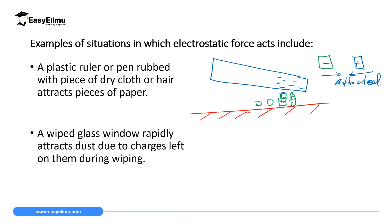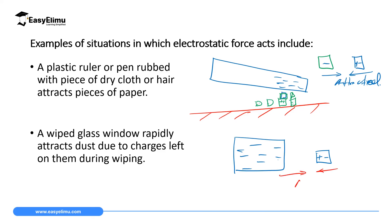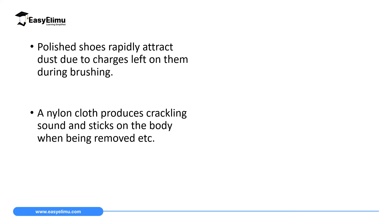Another example: a wiped glass window rapidly attracts dust due to charges left on it during wiping. When you wipe a glass window, it may be left with, say, negative charges. The dust particles in the air are neutral — having both positive and negative sides. When the dust comes close to the negatively charged window, the positive side of the dust and the negative charges on the window attract each other.